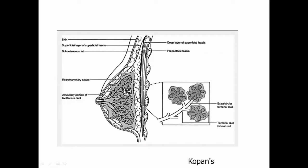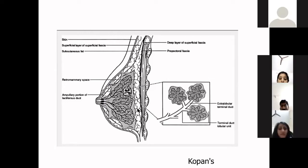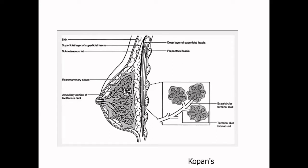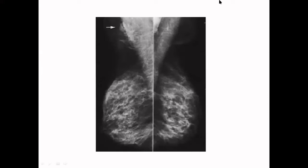The breast parenchyma sits between the superficial layer of the superficial fascia and the deep layer. Remember: skin thickness of more than two to three millimeters is abnormal — it can happen in malignancy or any condition causing edema. Just posterior to the breast parenchyma is a connective tissue layer called the retromammary zone, and then there is the pre-pectoral fascia.